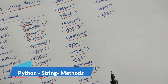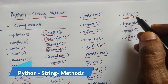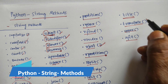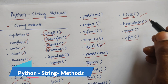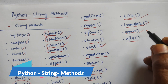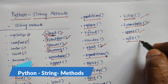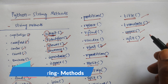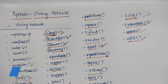Next is title, which converts the first character of each word to uppercase. Then translate, which returns a translated string. Upper converts a string into uppercase. Finally, zfill fills the string with a specified number of zero values at the beginning.